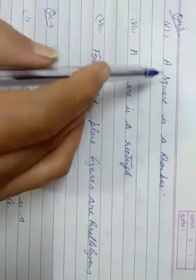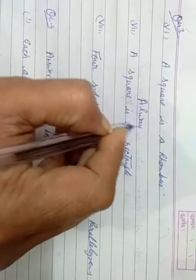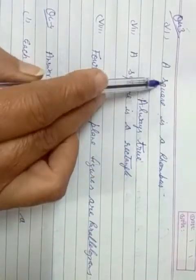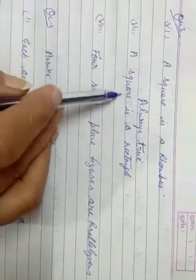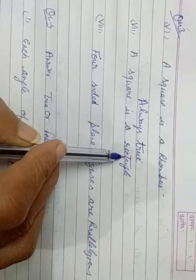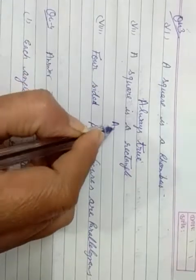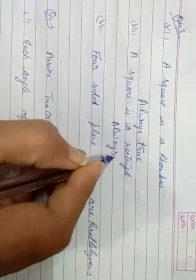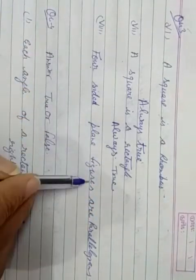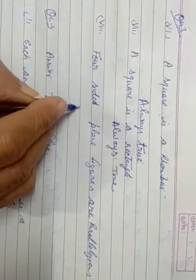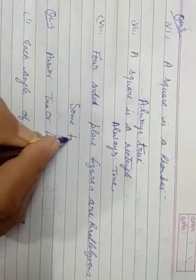Question number 3, part 6. A square is a rhombus — always true, because all sides are equal in both square and rhombus. A square is a rectangle — always true, because its opposite sides are always equal. A four-sided plane figure is a parallelogram — sometimes true, because sometimes it can be a trapezium and not a parallelogram.